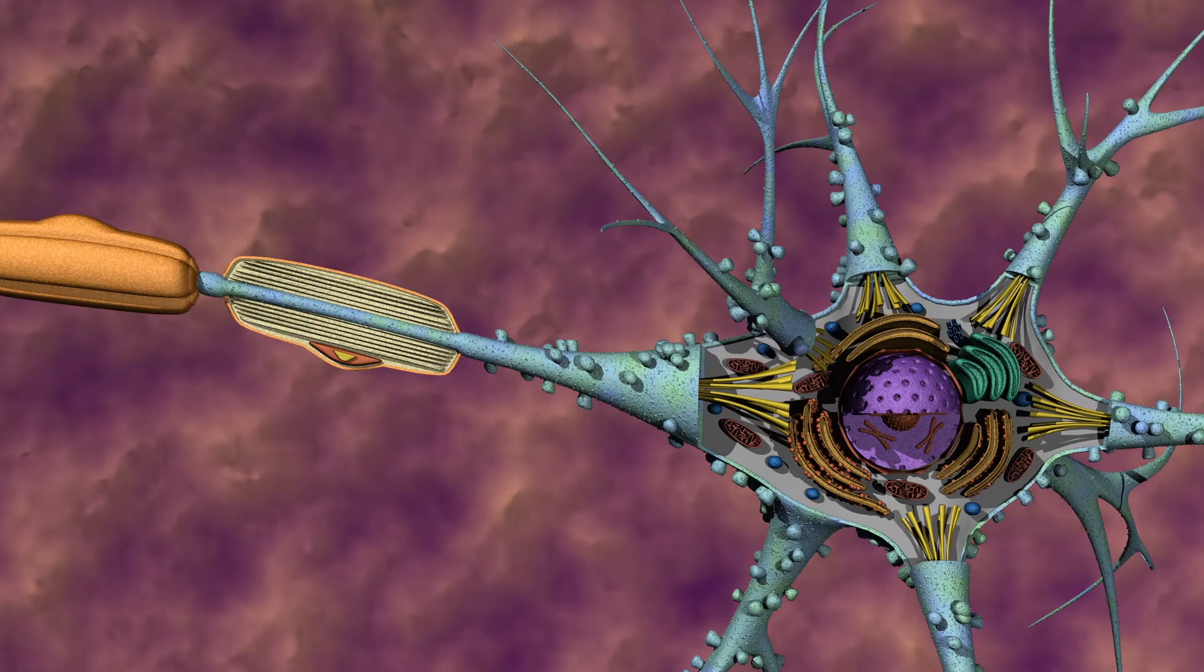Schwann cells containing layers of a substance called myelin wrap around the axon. The myelin acts as insulation that greatly increases the speed of electrical conduction.